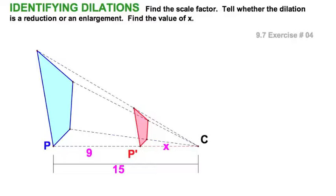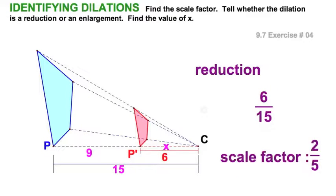Well, let's start with a simple exercise, number four. Clearly, this figure is a reduction. And furthermore, I can see this distance is six. So the scale is going to be six fifteenths, just like that. We can simplify. Our scale factor is two fifths.